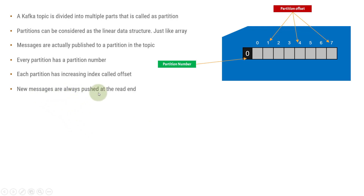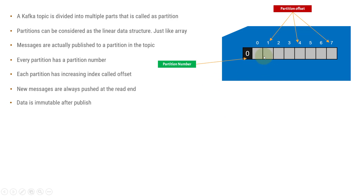Every partition has an increasing sequence of index values called partition offset. New messages are always pushed at the rear end — if you want to publish a new message, you always write at the end. Once you have published a message inside a Kafka partition, it is immutable. You can't replace or modify it. If you want to publish a new message, it will always get appended at the end.